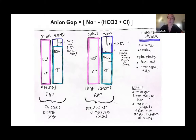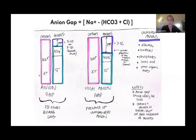A normal anion gap metabolic acidosis involves loss of bicarb, with chloride rising to compensate. The most common cause is diarrhea — your stool contains a lot of bicarb, so excessive diarrhea wastes it and your body compensates by increasing chloride, causing acidosis. Other common causes in the hospital include too much normal saline — which has excess chloride — and renal tubular acidosis.